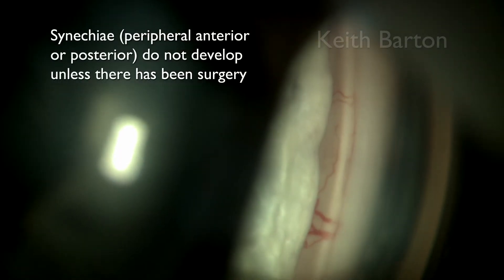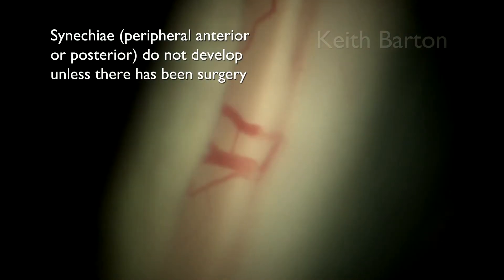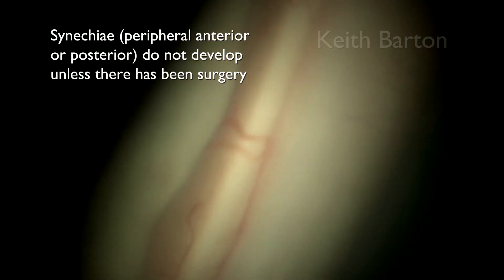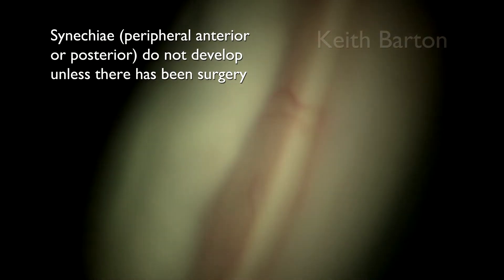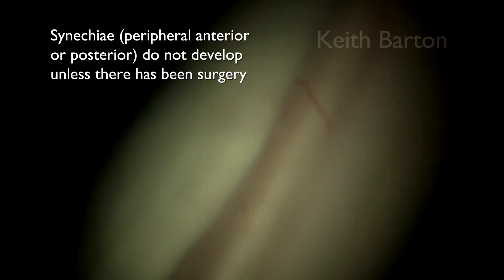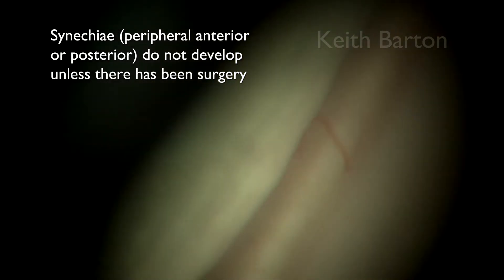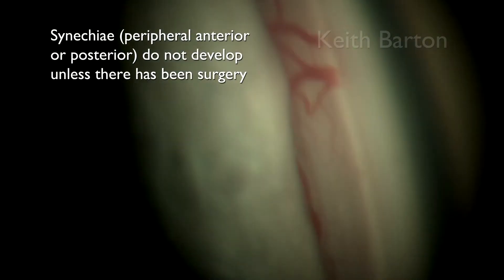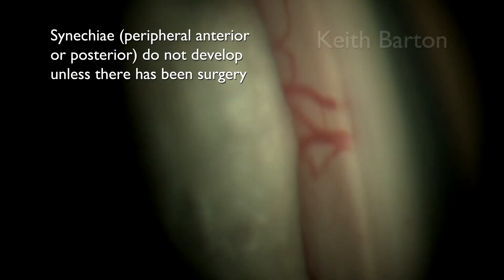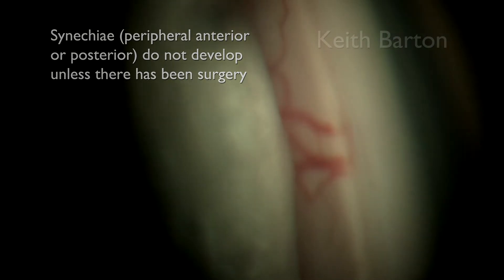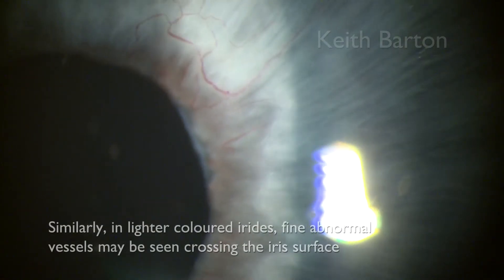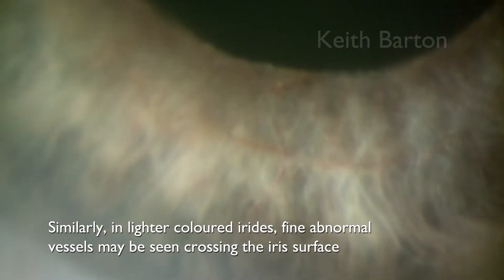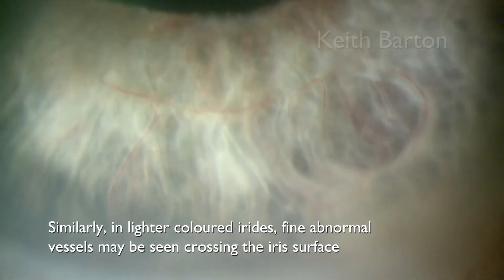Synechiae, both peripheral anterior or posterior, do not develop unless there has been previous surgery or some other complication. Similarly, in lighter coloured irides, fine abnormal vessels may be seen crossing the iris surface.